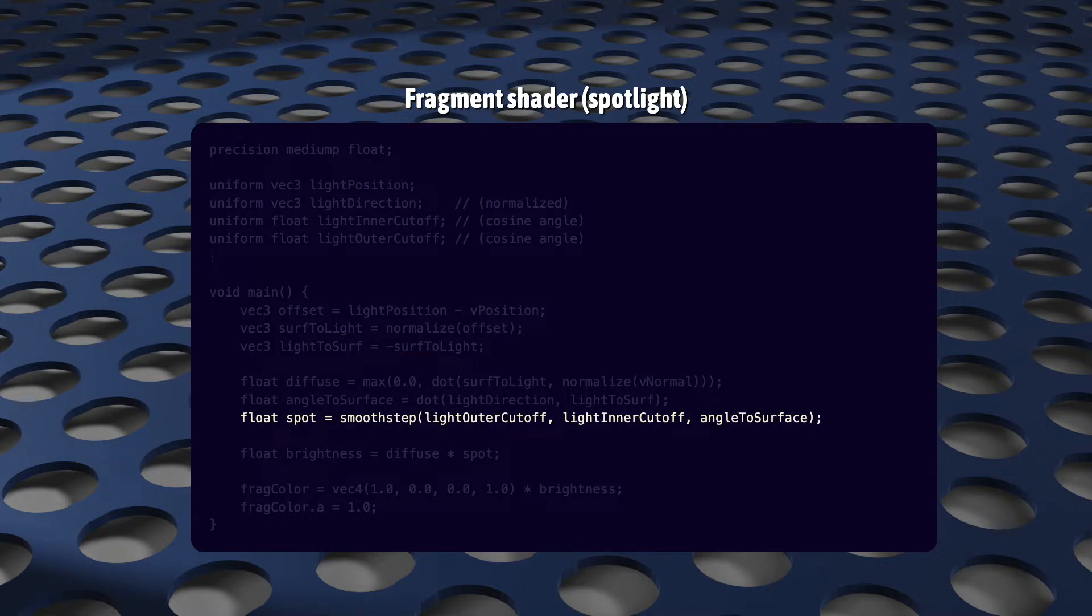And we use the GLSL function smoothstep to smoothly transition from the fully lit area to the fully unlit area, rather than having a sharp boundary.